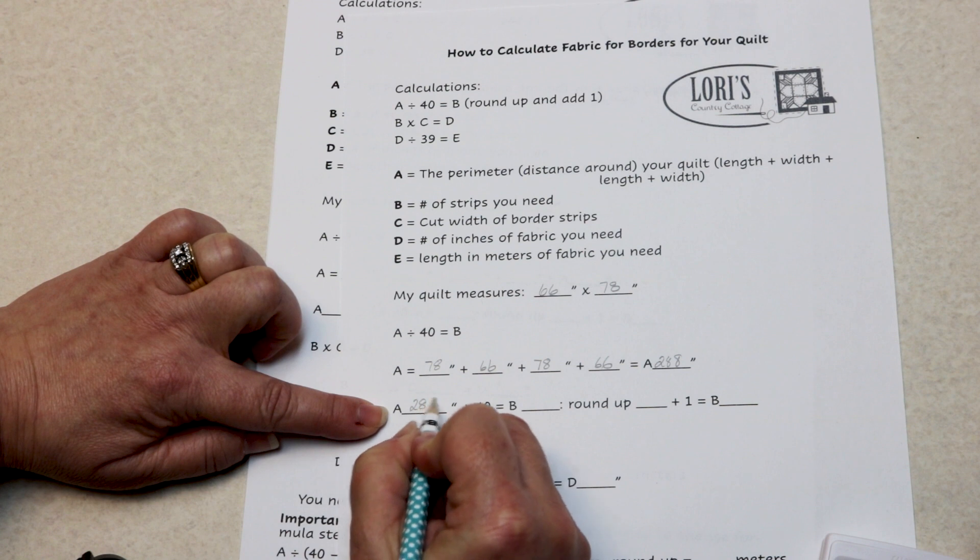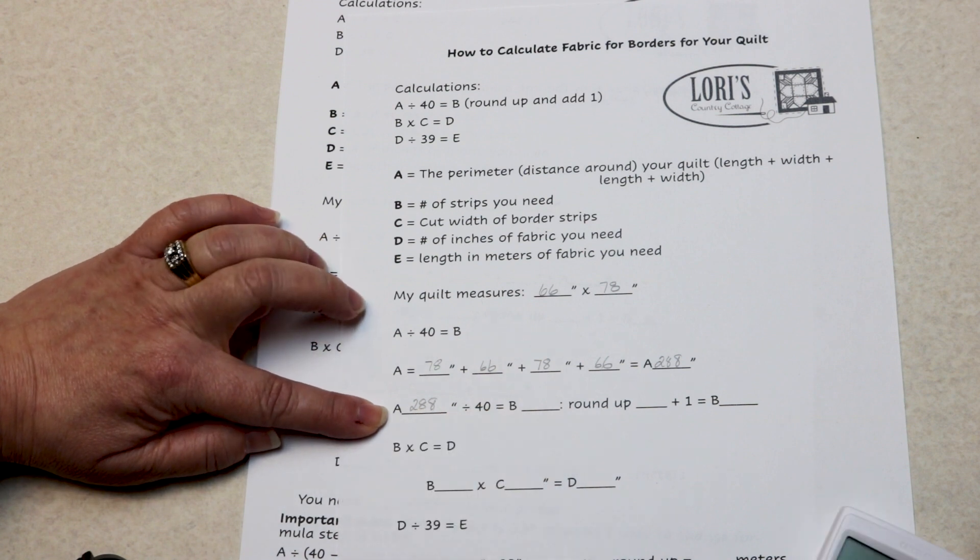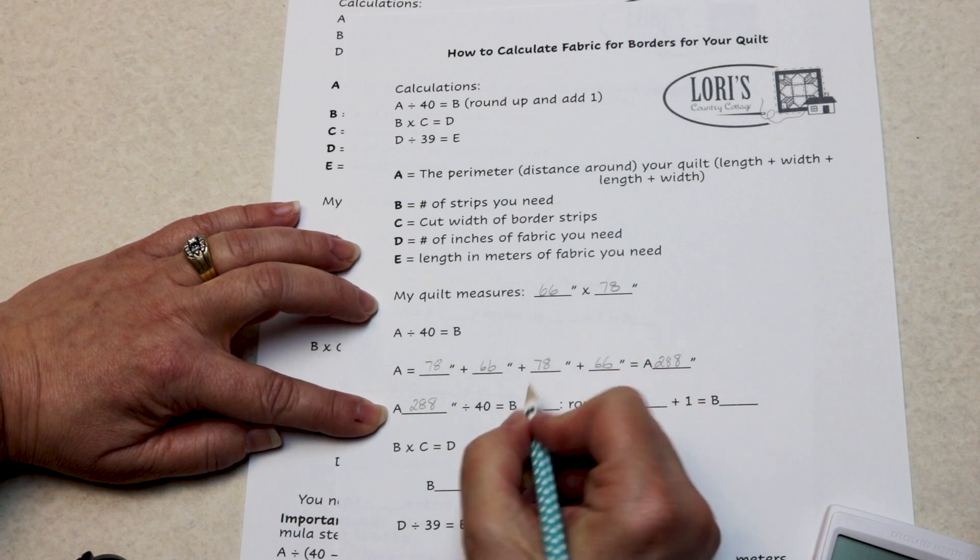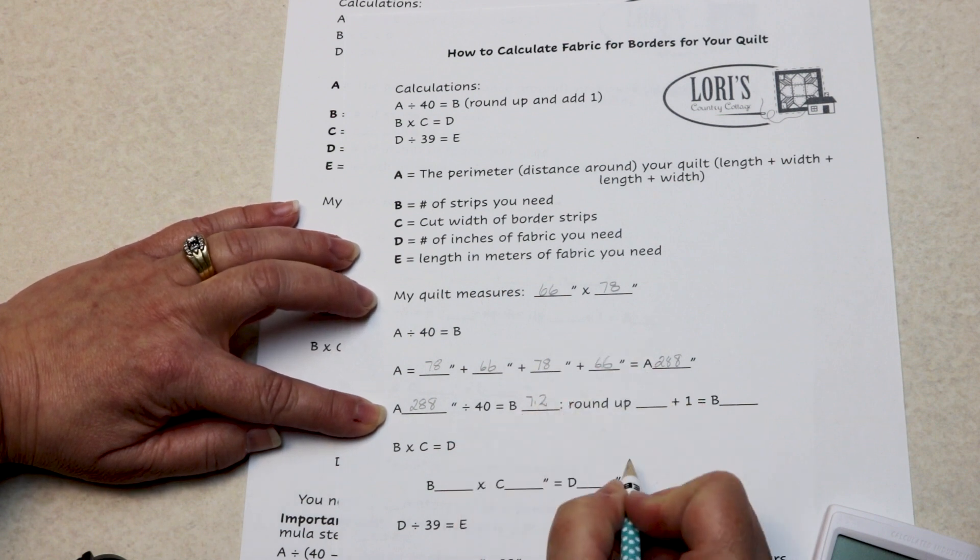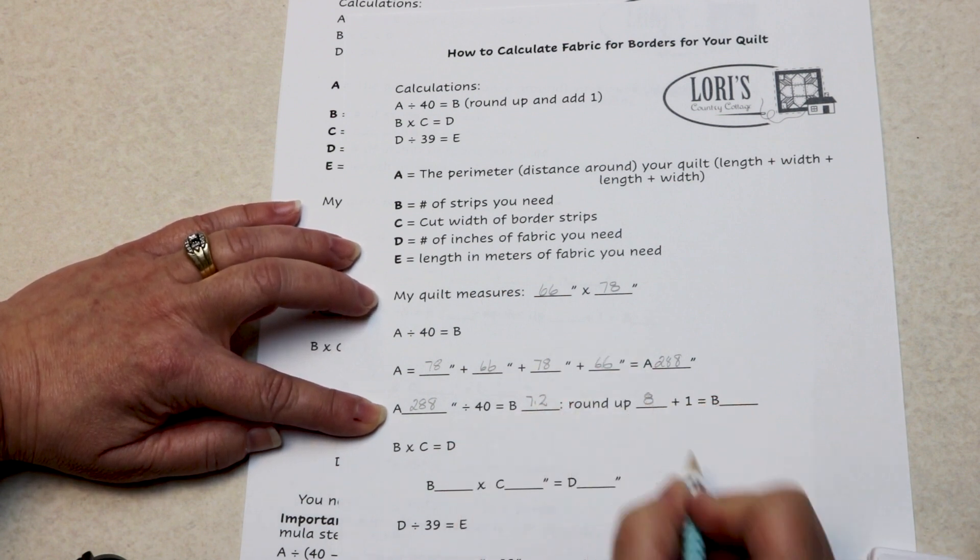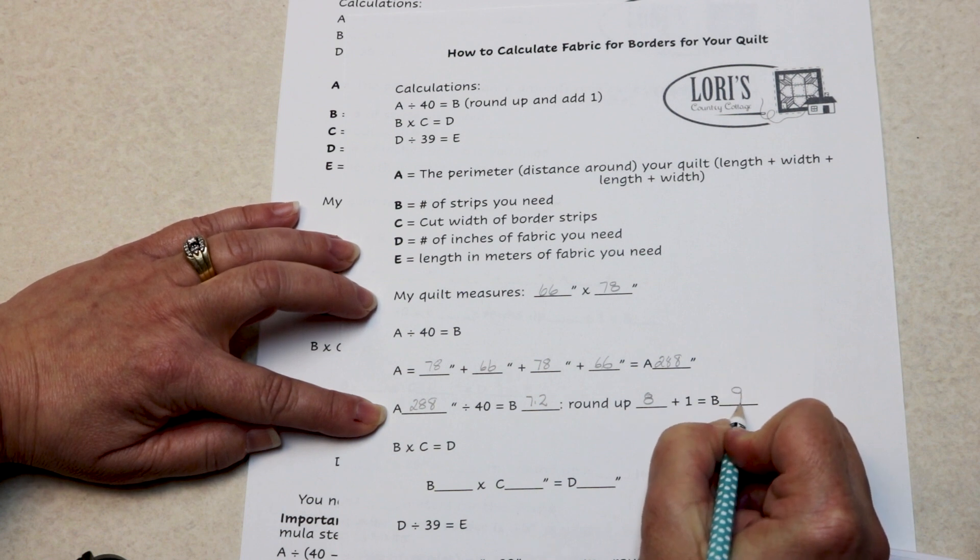288 inches divided by 40 tells me how many strips: 7.2. Round up makes it eight. Add one. I need nine strips.